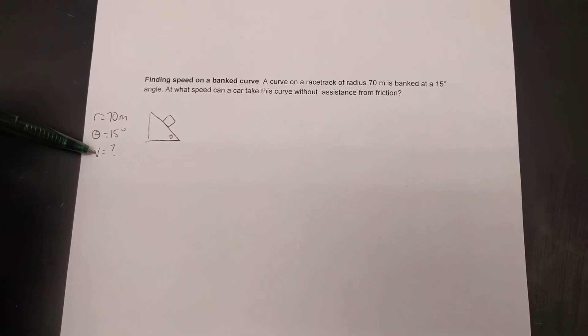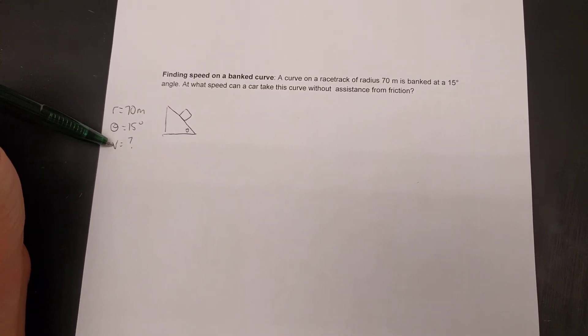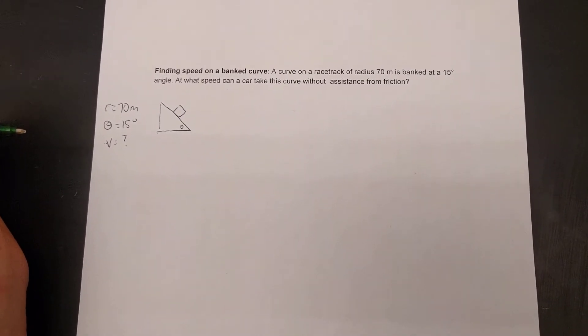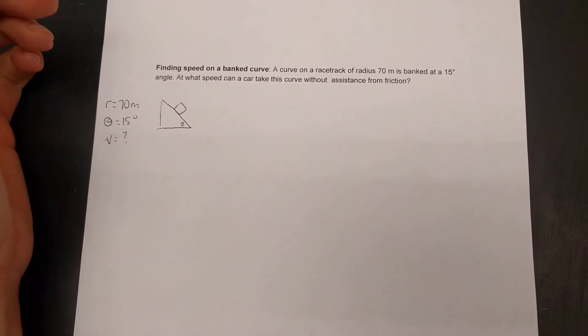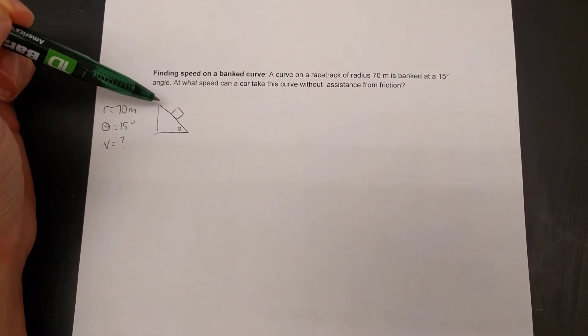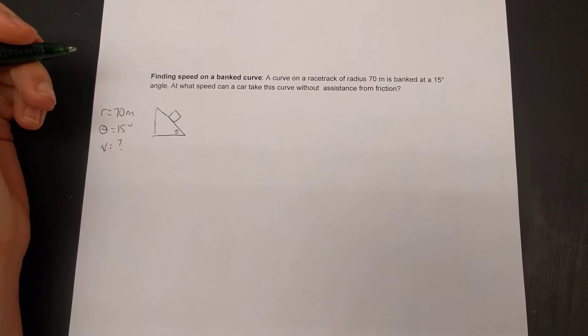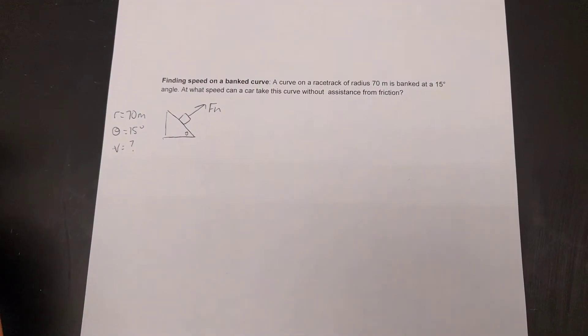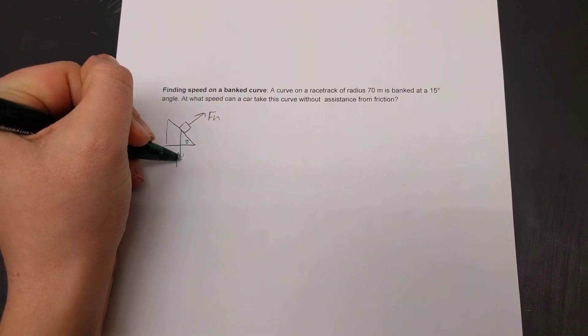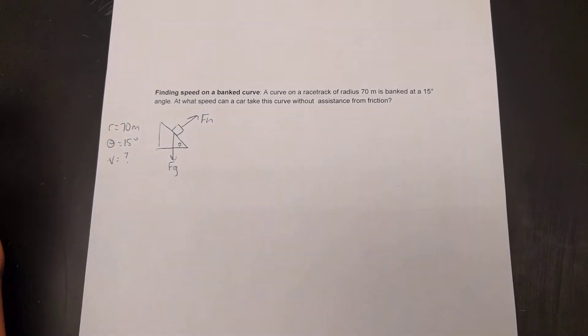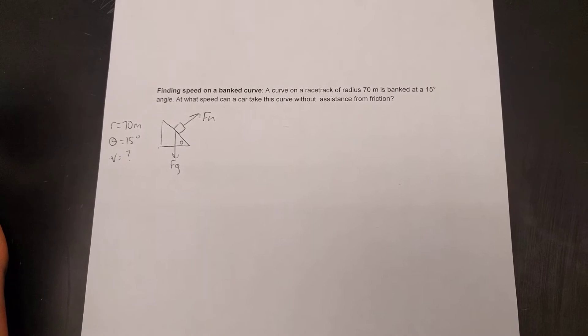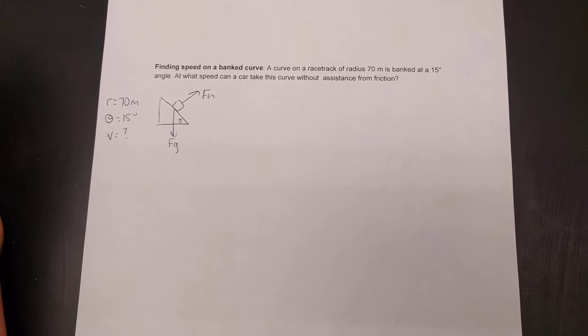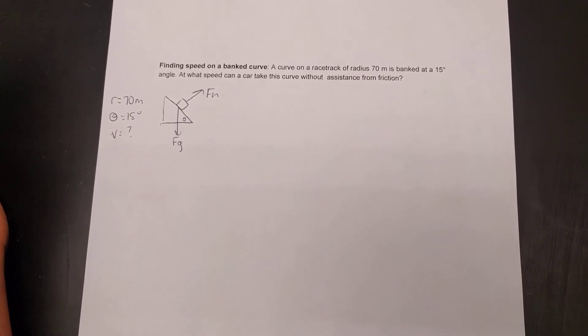Since we're going to use forces to solve this problem, we know that mass times acceleration becomes mv squared over r for an object in uniform circular motion, which is what we'll assume our motion is here. Looking at this, we don't want any friction in our problem. So, the only forces we have are the normal force, acting perpendicular to our surface, and the gravitational force, which is acting straight down.